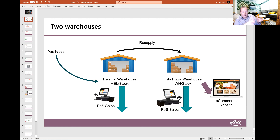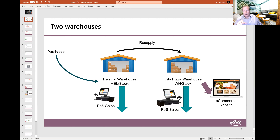In this case, purchases are done typically so that they are arriving to Helsinki Warehouse, and then Helsinki Warehouse resupplies the City Pizza Warehouse. In both warehouses there is a point of sale, so end customers are buying from each warehouse, and when doing normal sales operations using Odoo's sales module, we can use both warehouses as a source.